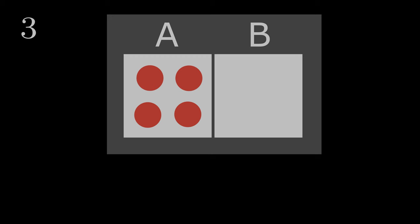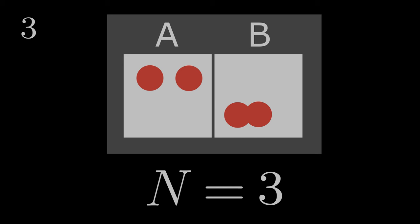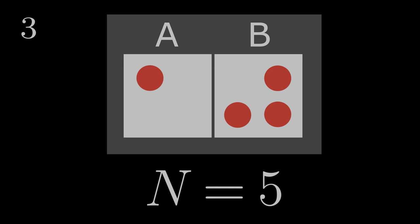Let us now consider a third system with no restrictions on how particles can be distributed in subsystems A and B. In the first microstate, all particles are in subsystem A. The second microstate has one particle in subsystem B. The third has two particles in subsystem B. The next has three particles in subsystem B. And the last microstate has all four particles in subsystem B. This system has five possible microstates.